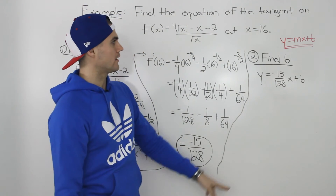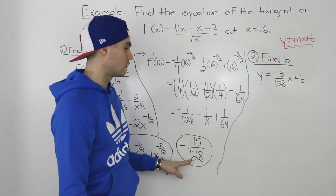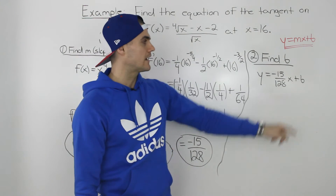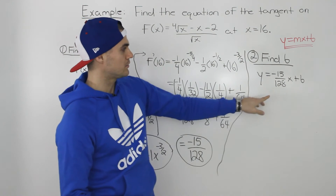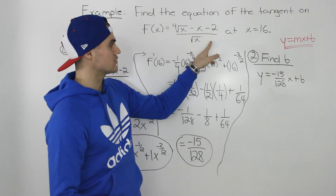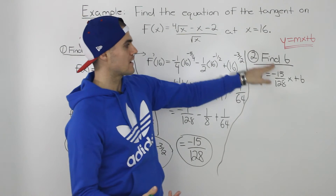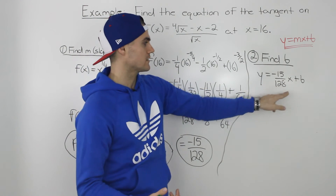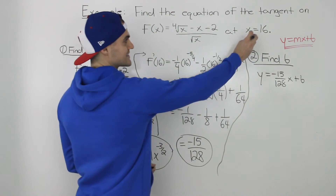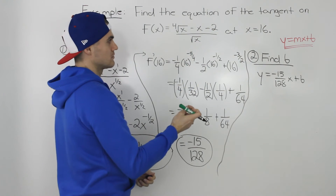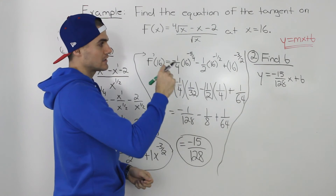We've found the m value, so the equation so far is y equals negative 15/128 times x plus b. Now we need to find b. To do that, we plug in a coordinate on the function. We know x equals 16, but we also need the y value, which we get by plugging 16 into the original function.